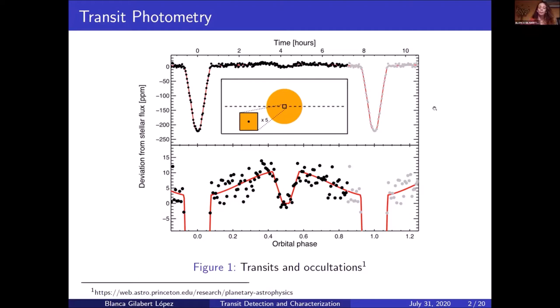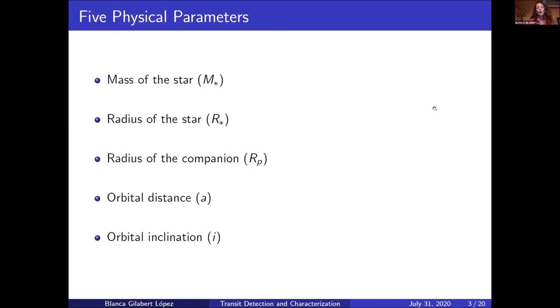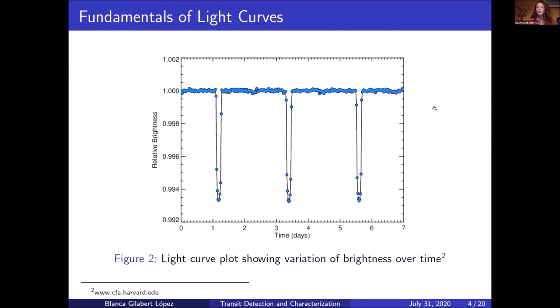From transit photometry we can derive some of the properties and characteristics of a star planetary system. For example, the mass of the star, the radius of the star, the radius of the companion which will be the radius of the planet, the orbital distance, and the orbital inclination. It is essential to understand the light curve of transit photometry in order to approach these parameters. Here again you can see in the y-axis the relative brightness and in the x-axis the timing days. So here for example this star had three transits within a period of seven days.